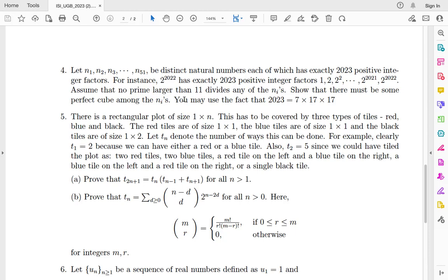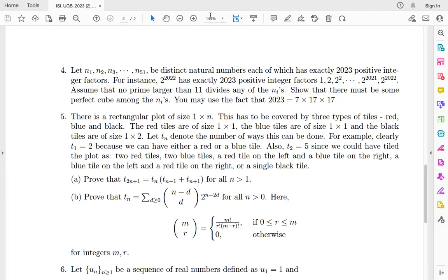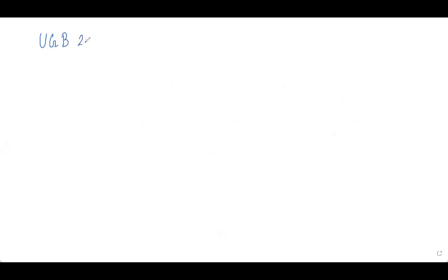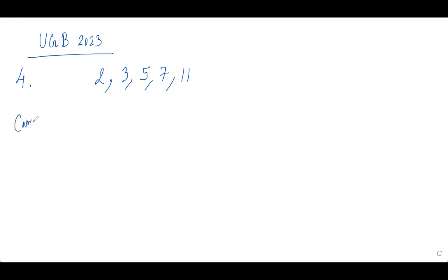You must use the fact that 2023 equals 7 × 17 × 17, which was a major hint — once this is given, half of the problem is already done. So the prime factors available are 2, 3, 5, 7, and 11. Now let's consider our cases. My idea is to form a set of numbers using these prime factors, each with exactly 2023 positive divisors, while trying to maximize the count of non-perfect-cube numbers.